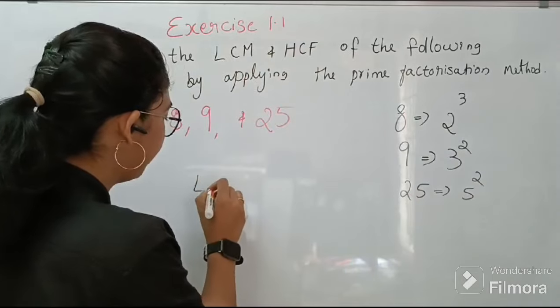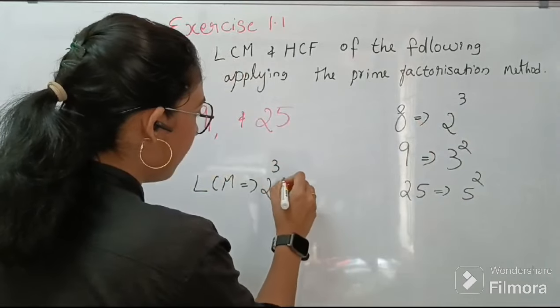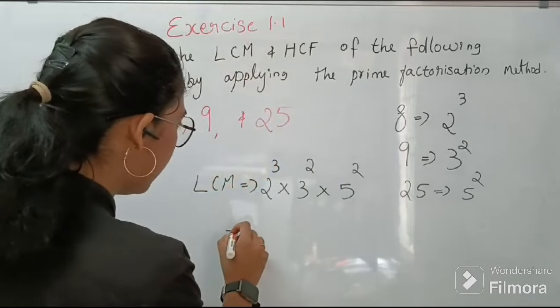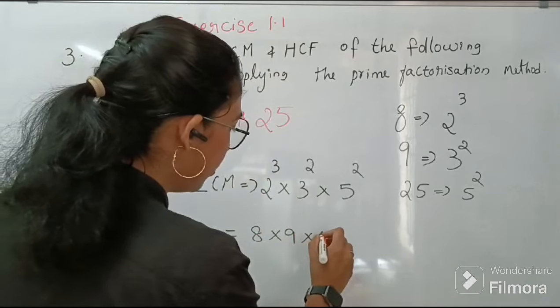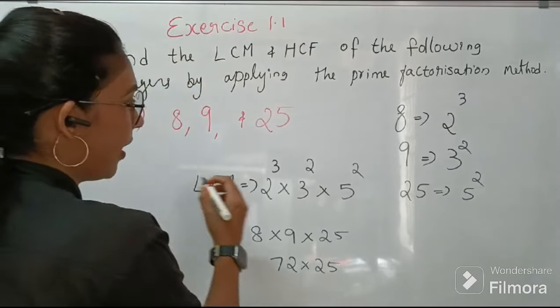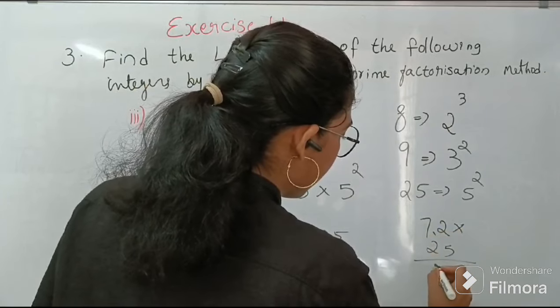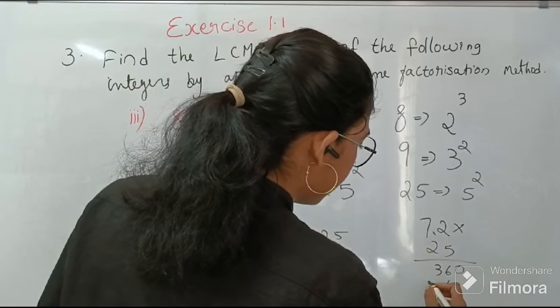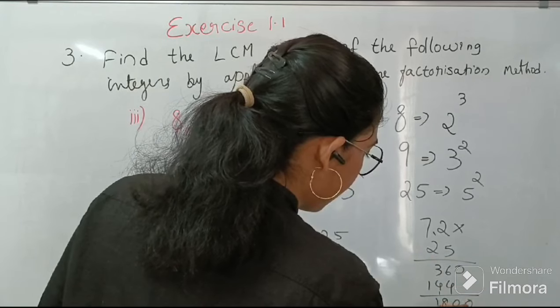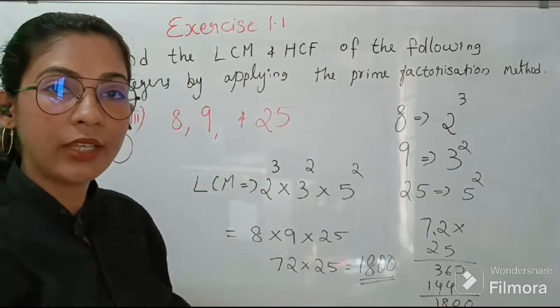So what is LCM? Since there is no common factor we have to multiply all these factors. That is 2 to the power 3 into 3 to the power 2 into 5 to the power 2. So 8 into 9 into 25. That is 72 into 25. What is 72 into 25? That is 1800. So here the LCM is 1800.